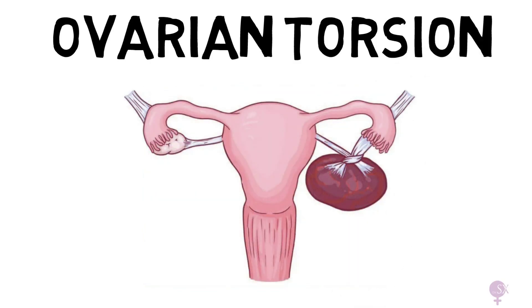Torsion of the ovary, tube, or both is a gynae emergency. It usually occurs in the presence of an ovarian cyst, making the ovary heavier and more likely to twist on itself.